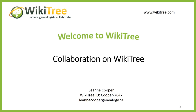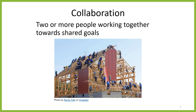WikiTree is all about collaboration. In this video I'll be discussing how collaboration works on WikiTree. Collaboration is simply two or more people working together towards shared goals. Collaboration is nothing new — people have been collaborating since the dawn of humanity. What has changed is the technology that makes collaboration easier than ever. The internet and social media have made it easier to find people with shared goals and interests, and once we find them, to share information and to work together.